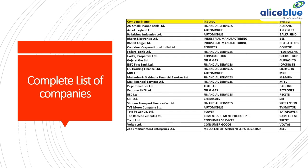This is the complete list of the 25 companies in this index. You can see companies from different industries including AU Small Bank, Ashok Leyland, Balkrishna Industries, Bharat Forge, Federal Bank, Gujarat Gas, IDFC First Bank, LIC Housing Finance, MRF, Petronet Energy, RCF, SRF, Shriram Transport Finance, TVS Motor, Tata Power, Ramco, Trent, Voltas, and G Entertainment. It has representation from all leading companies in the mid-cap space.